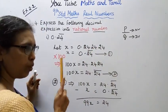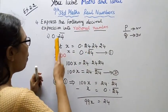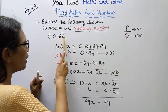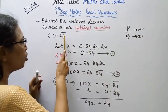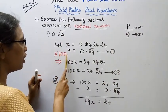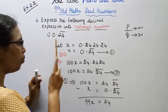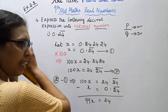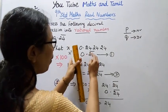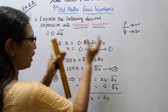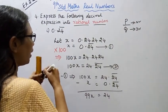This is equation 1. Now, the decimal point, how many numbers are there? 1, 2. Two numbers, so multiply by 100. Multiply by 100. This is left hand side, x is left hand side, 0.24 bar is right hand side, multiply by 100.